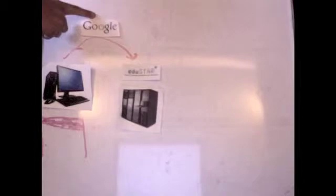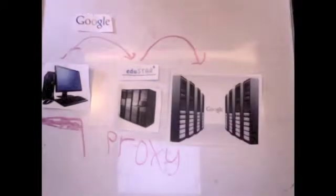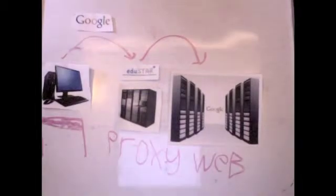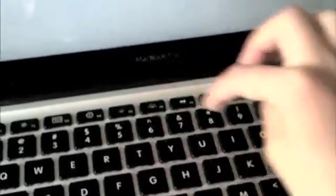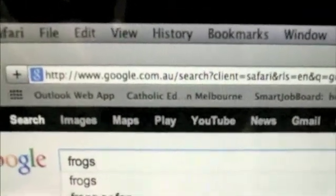You click on Google Chrome and the computer sends a message to the proxy server. The proxy server checks the URL. It allows you to connect to the Google server. Then you type in frogs. This is just an example and it sends a message to the proxy server. The proxy server checks the URL. It allows you to connect to the Google server.